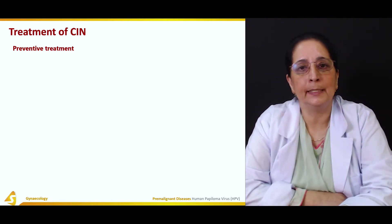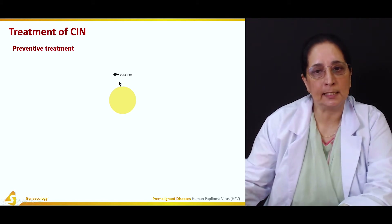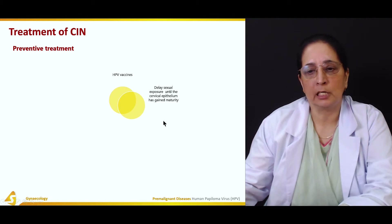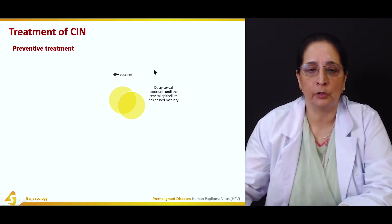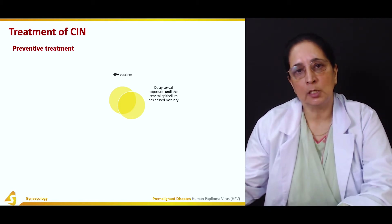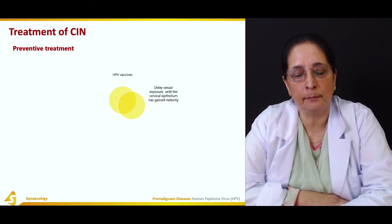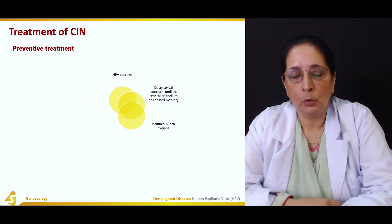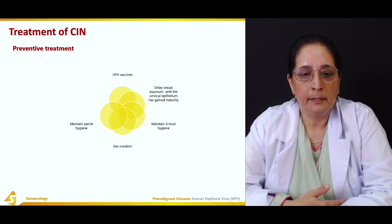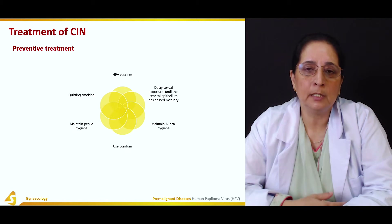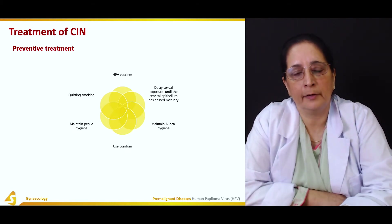Treatment of cervical intraepithelial neoplasia includes preventive treatment. Preventive measures are: HPV vaccination, delaying sexual exposure until the cervical epithelium has gained maturity, maintaining local hygiene, use of condoms, maintaining penile hygiene, and quitting smoking. These are important preventive methods for cervical cancer and cervical neoplasia.